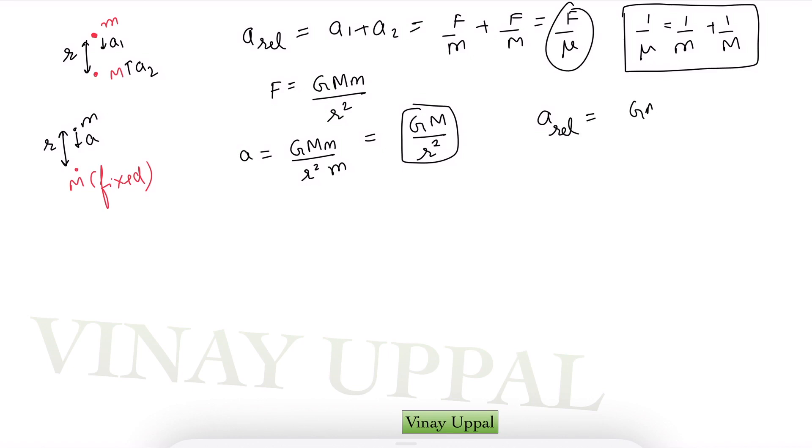So that will be GM/r² times m/μ. If I just compare these two you should be able to see the equivalence is that basically we have GM being replaced or rather being multiplied by the factor of m/μ. And this is how you will go from one body system to two body system.